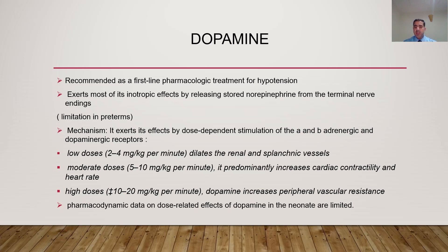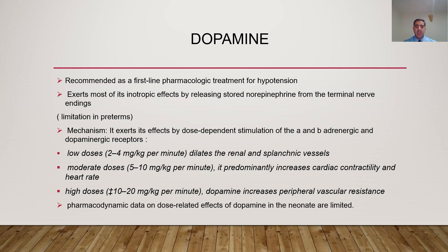Dopamine's mechanism is dose-dependent, stimulating alpha and beta adrenergic and dopaminergic receptors. At low doses, it dilates renal and splanchnic vessels — hence the term 'renal dose.' At moderate doses of 5–10 mcg/kg/min, it predominantly increases cardiac contractility and heart rate. At high doses, peripheral vascular resistance increases. Note that this dose-effect data came largely from adult and pediatric studies, and pharmacodynamic data specific to neonates is limited.